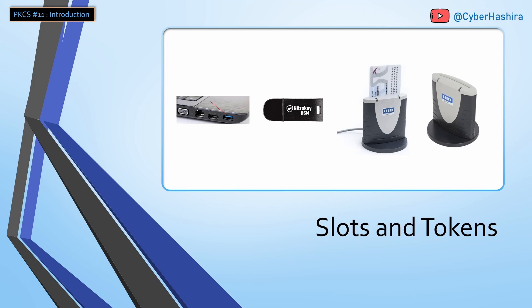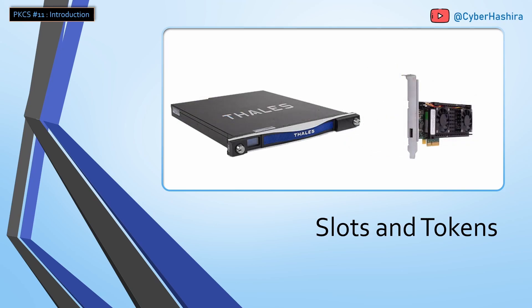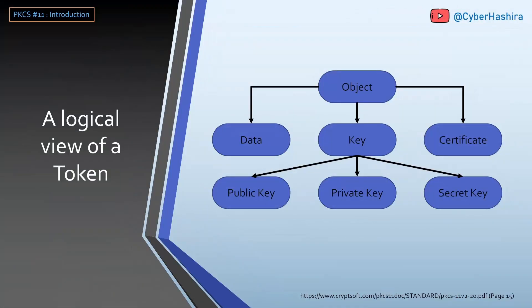A smart card reader with a smart card connected to it becomes a token-ready slot. Similarly, a USB port without a USB device is just an empty slot, but when you connect a device to it that slot becomes a token-ready slot. There can also be scenarios where a slot always has a token present — for example, a network HSM, a PCIe HSM, or a cloud HSM does not need a physical plug-and-play slot. PKCS#11 sees these devices as a slot which already has an active token present in it.